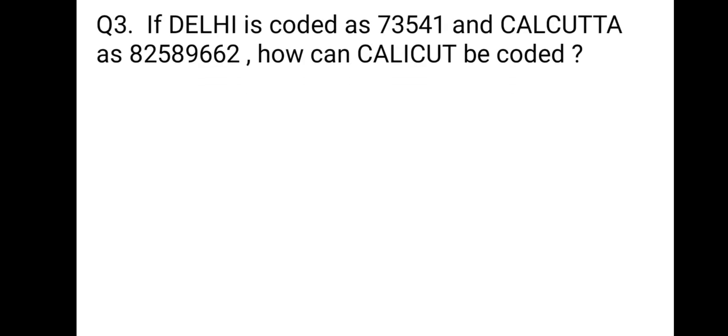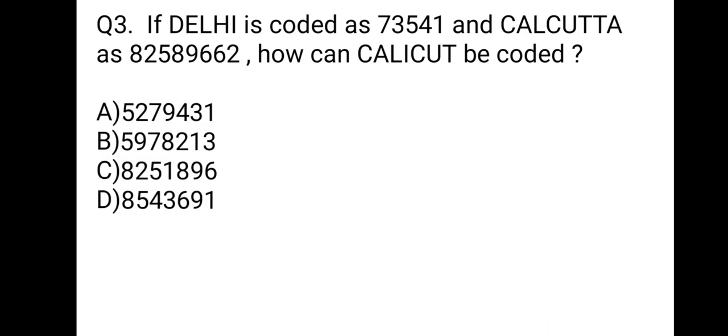If DELHI is coded as 73541 and CALCUTTA as 82589662, then how can CALICUT be coded? Options are there. Now, in the same way, we can write DELHI and CALCUTTA. We can write the numbers given below. 73541 for DELHI, 82589662 for CALCUTTA.